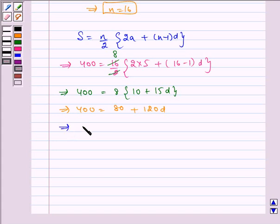Which implies 120D is equal to 400 minus 80, which implies 120D is equal to 320.